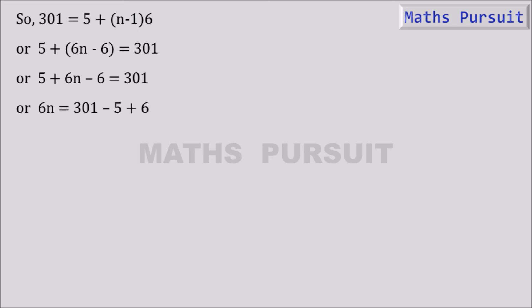Or 6n is equal to 302, or n is equal to 302 by 6, which is equal to 50.33.